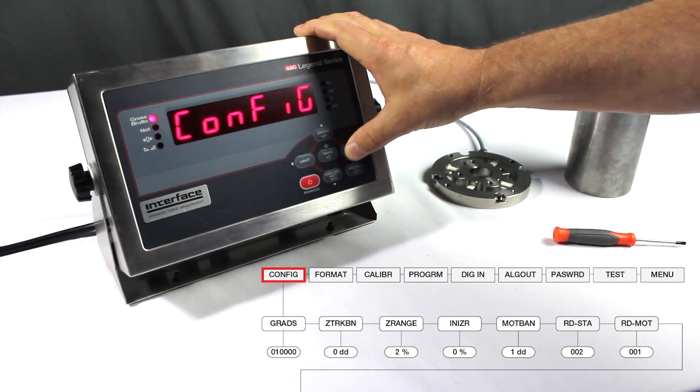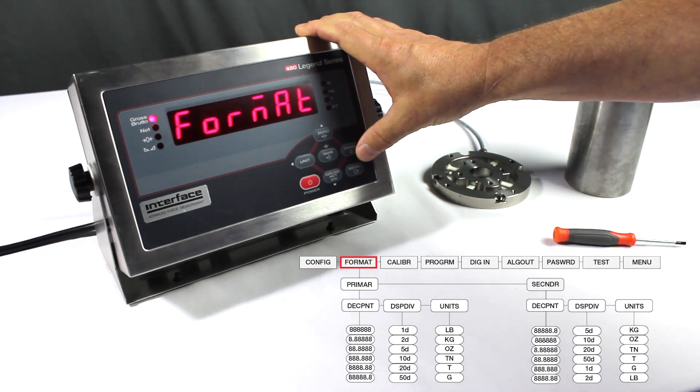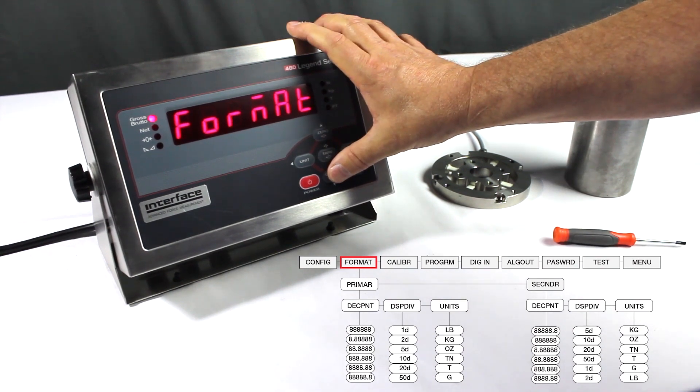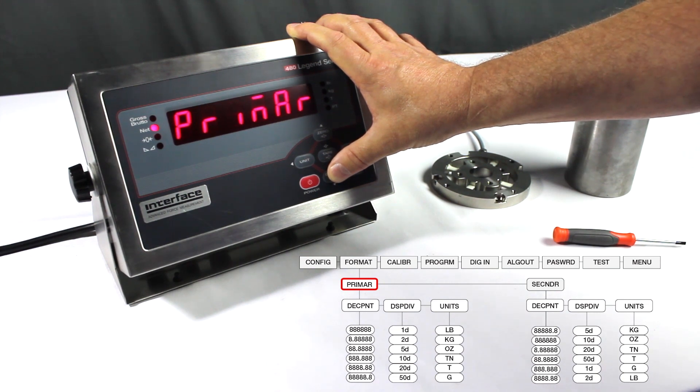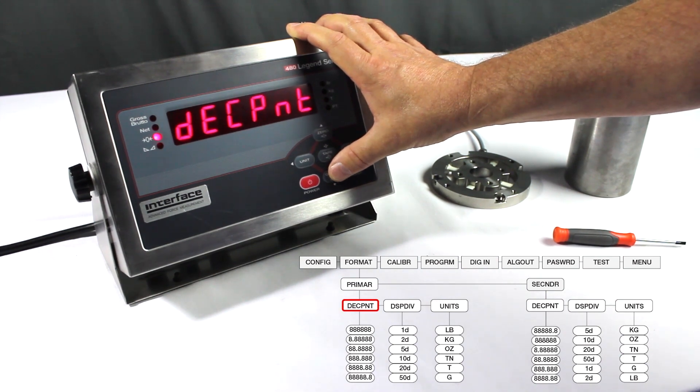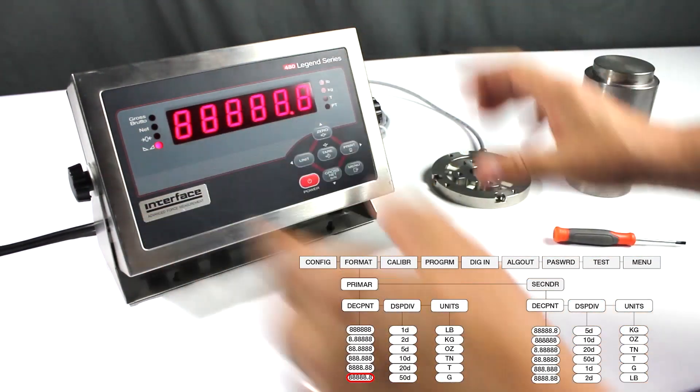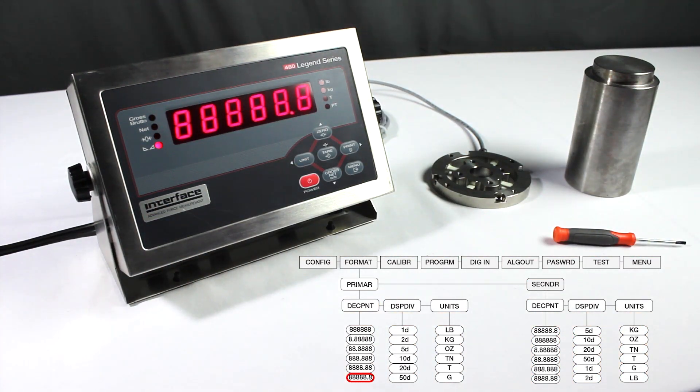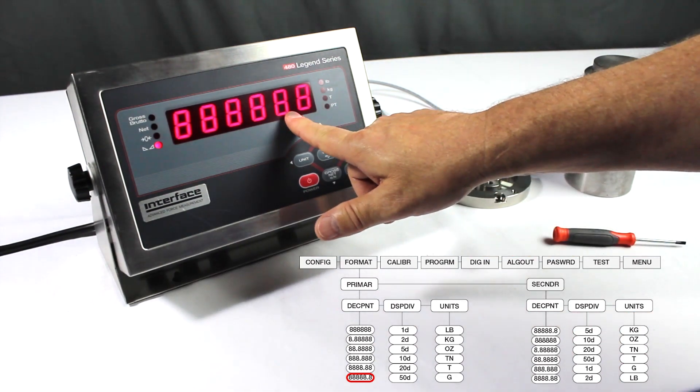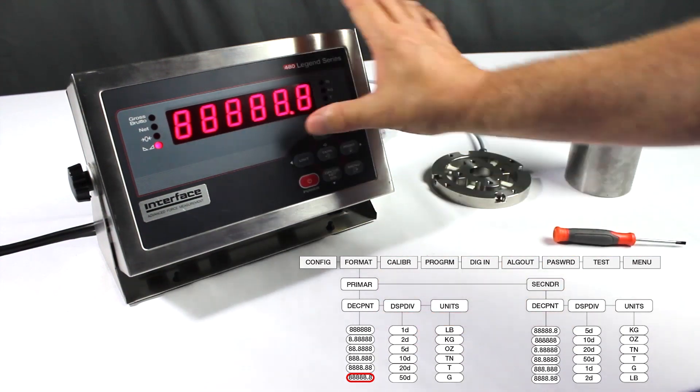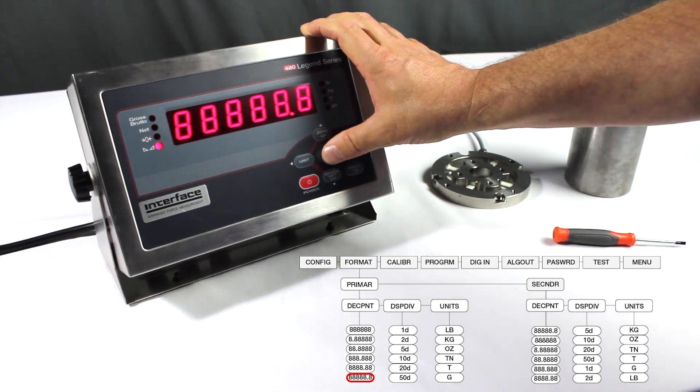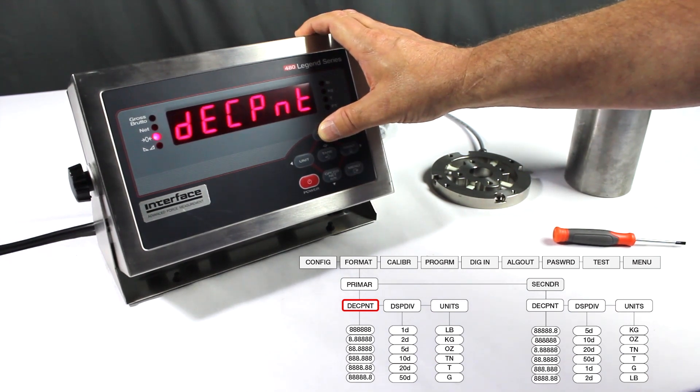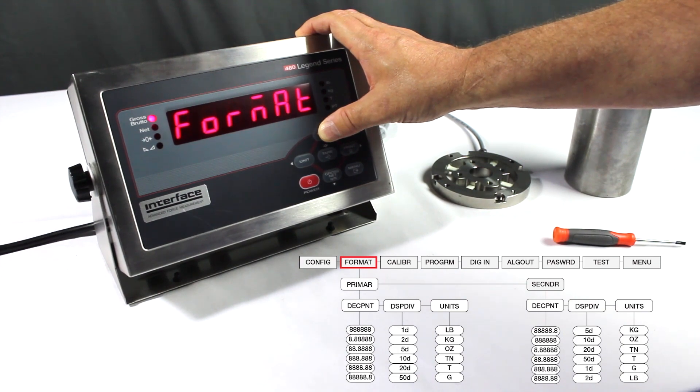We're going to move to our next menu step, which is going to be format. I arrowed up to the config where we came from, one over to the format. Now we're going to start moving down the format path. We're going to do primary, which is the main one. There is a secondary option as well. Right now we're just doing the primary. We're going to do the decimal point. When I arrow down, now it's showing me where the decimal point is currently located. For our calibration today, we're going to leave it in this particular position, which is there's one digit to the right of the decimal point. But if we wanted to move it, we just use the arrow right and left keys. When we're done, we hit the enter key, and that takes us back up a menu step.